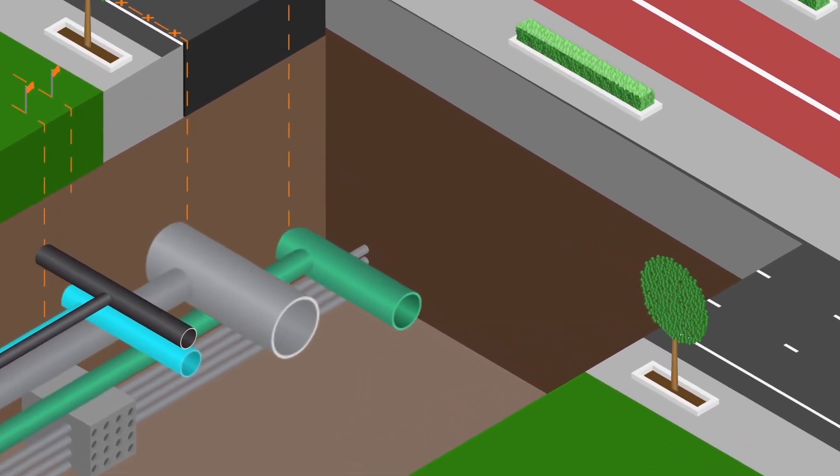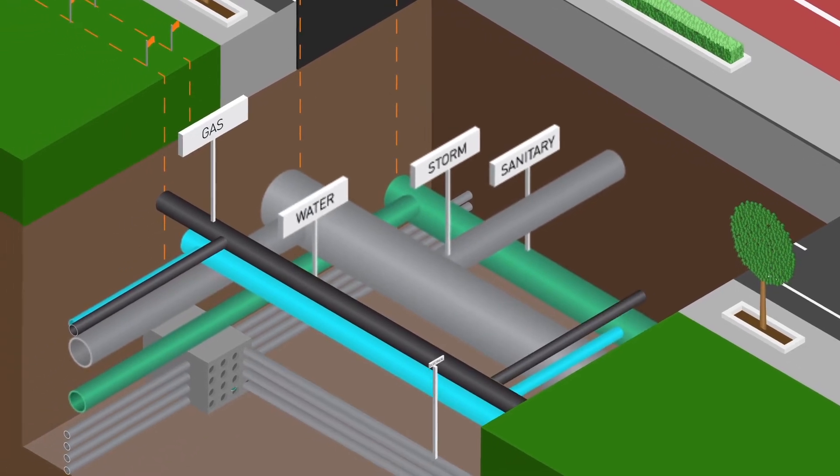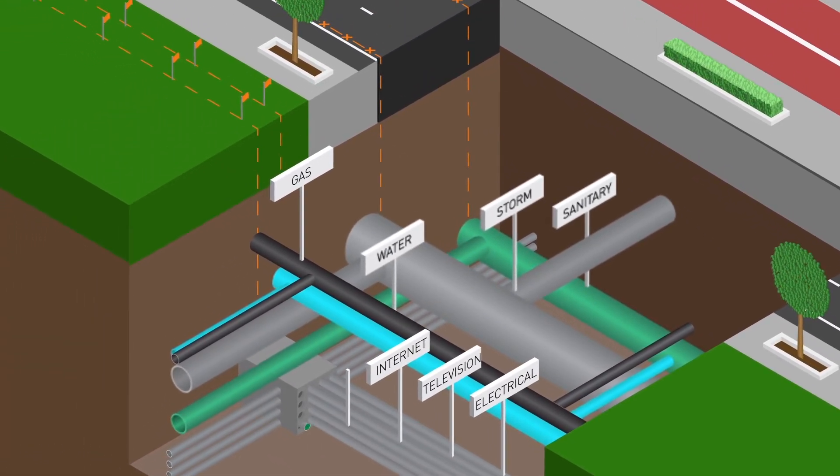The most common things you'll find are storm and sanitary sewers and pipes, water mains, gas mains, electrical wires, television and internet cables, and phone lines.